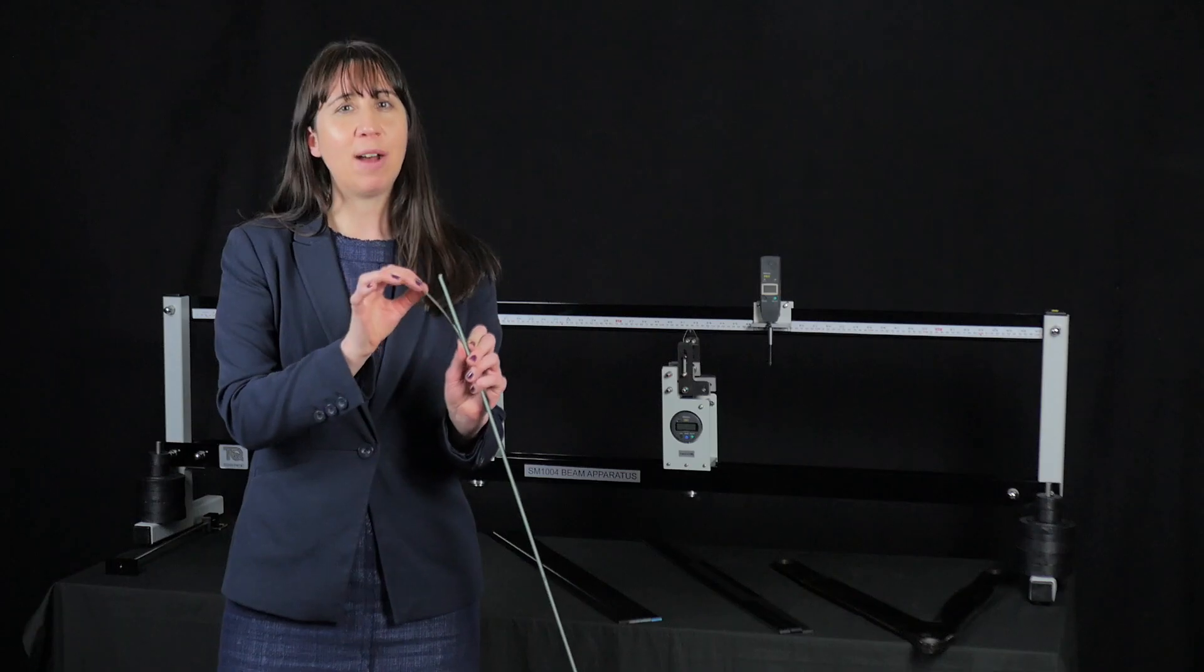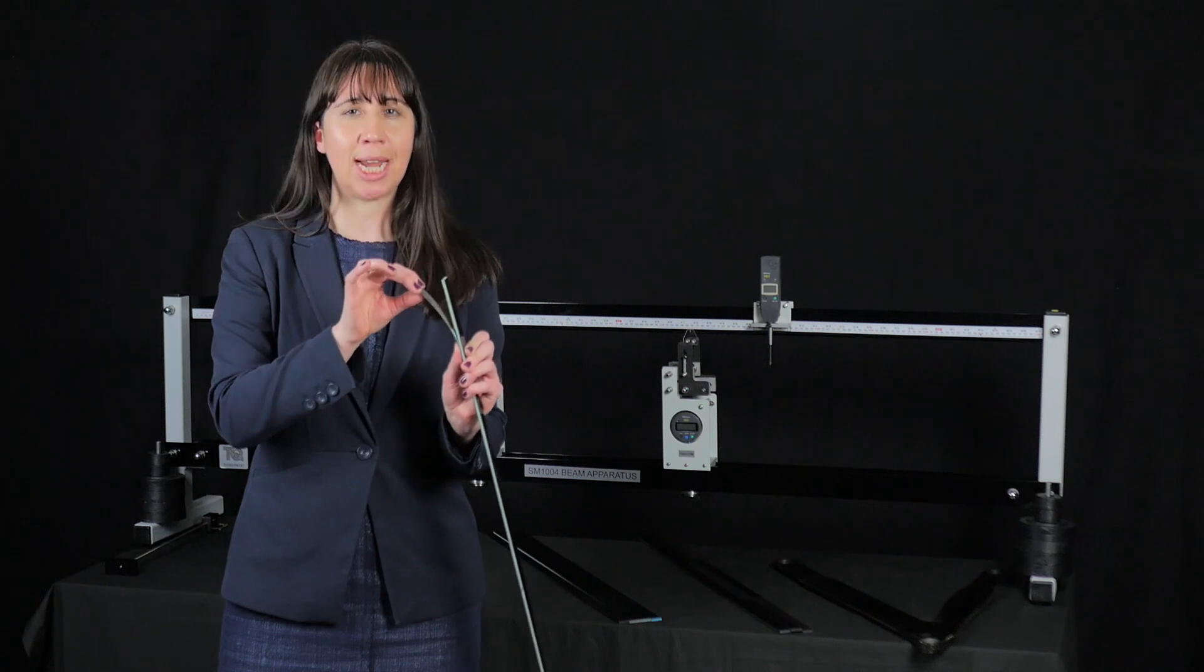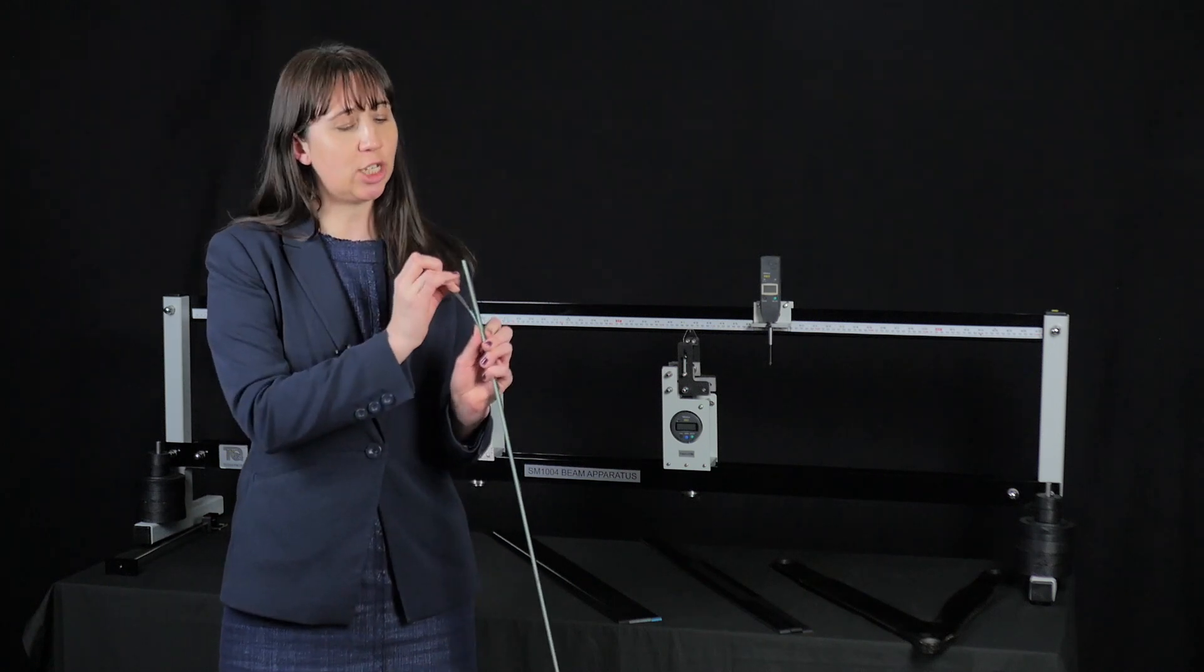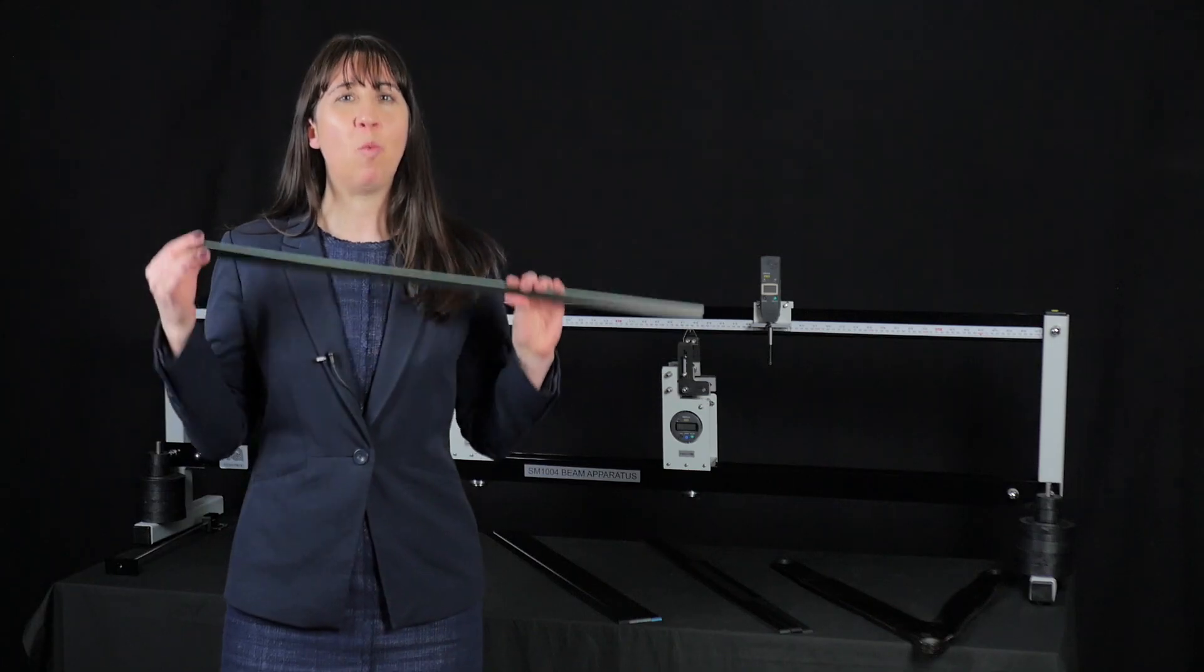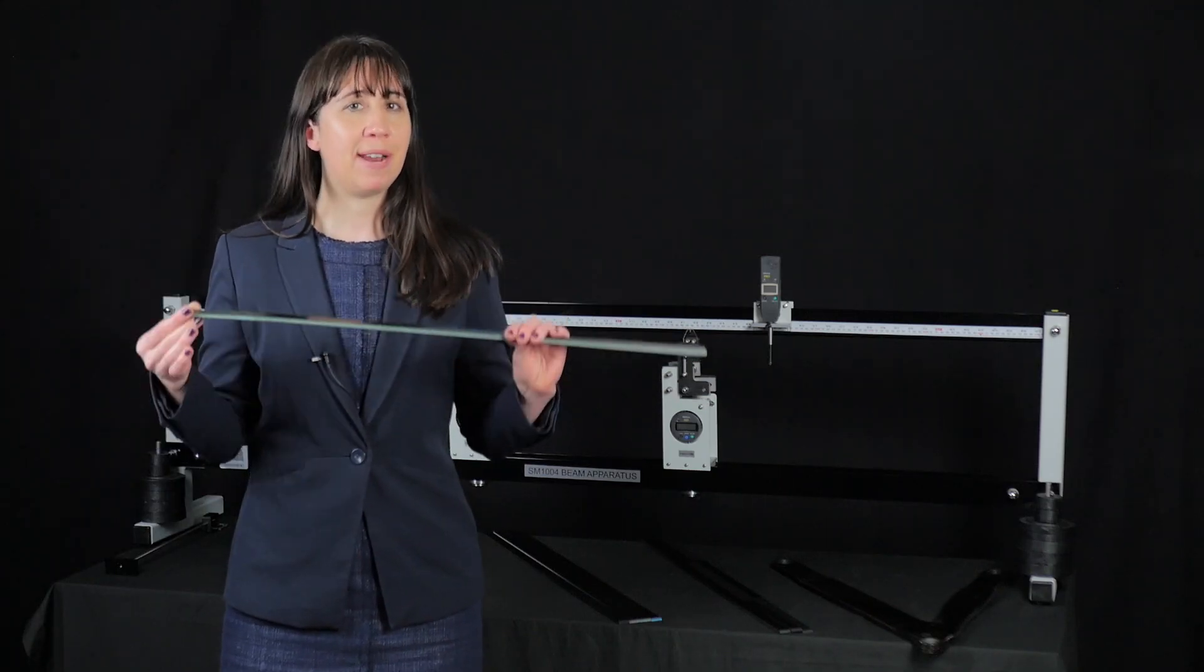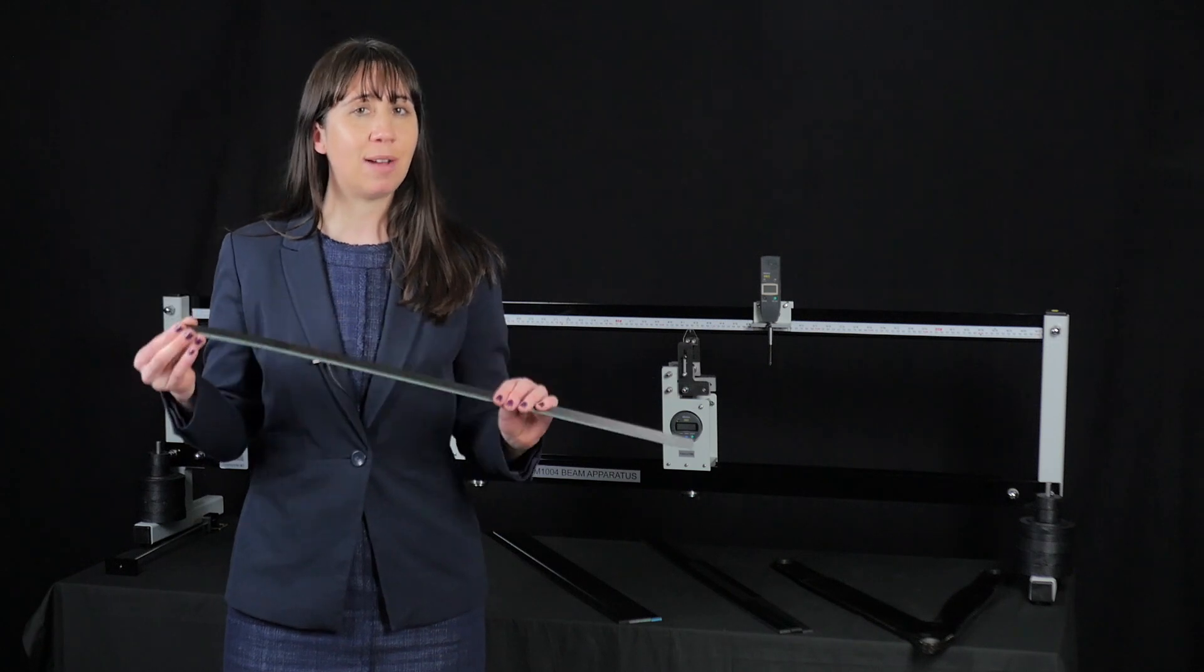As you can see there's an outer high strength carbon skin and sandwiched within this is the foam core. This is particularly useful when weight is an issue. There's also the benefit of thermal conductivity and sound insulation.